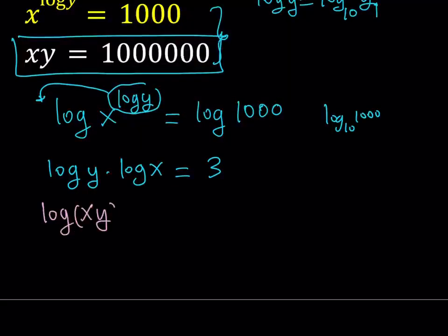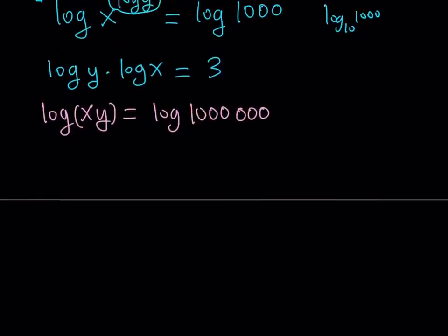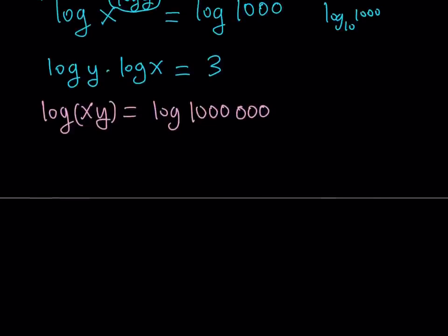That gives us log xy equals log 1,000,000. And 1,000,000 is a very large number, right? Depending on your unit, of course, if you have a million dollars, that's kind of cool. Anyways, this is log 1,000,000, which is 10 to the sixth power.